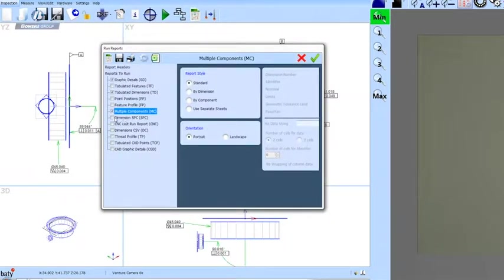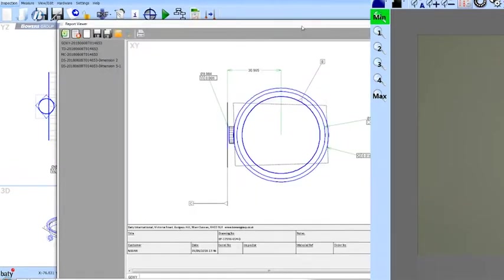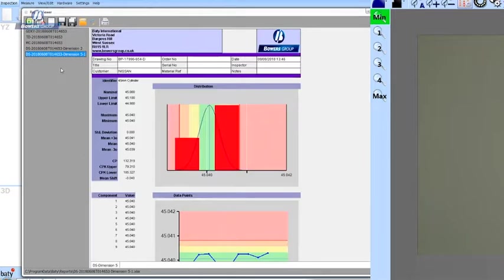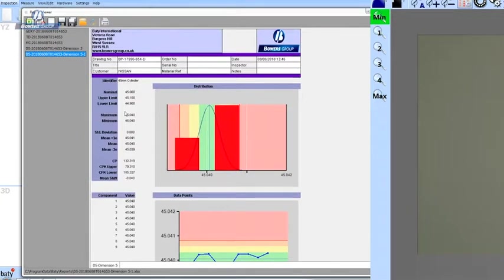And finally if we look at SPC, SPC data is also collected in our software. We have very good SPC capability included as standard in the software and you can see here I've picked one of the dimensions and we've got a normal distribution chart here and here's our X bar chart for this particular dimension measured over nine components. Control limits are calculated automatically and all of the statistical summary information is listed here. Again that's Excel compatible.